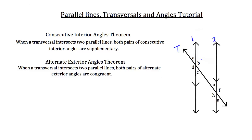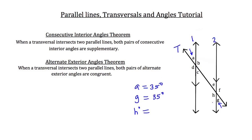We also know that angles A and G are congruent to each other, and you can tell they actually look congruent just by looking at them. So if angle A had a measurement of 35 degrees, you would automatically know that angle G has a measure of 35 degrees because of the alternate exterior angles theorem. You could even go so far as to know angle H, because G and H are a linear pair. So if G is 35 degrees, then angle H must be 145 degrees.